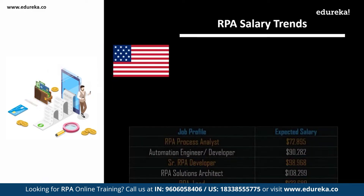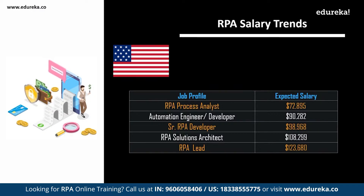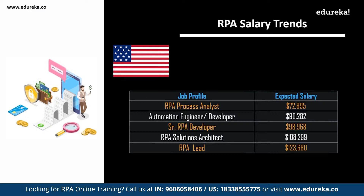In the USA, an RPA Process Analyst can expect around $70,000; an Automation Engineer or Developer can expect around $90,000; a Senior RPA Developer can expect around $98,000; an RPA Solutions Architect can expect around $100,000; and an RPA Lead can expect around $123,000. This is a huge amount of money, so now is the right time to start your career in RPA.